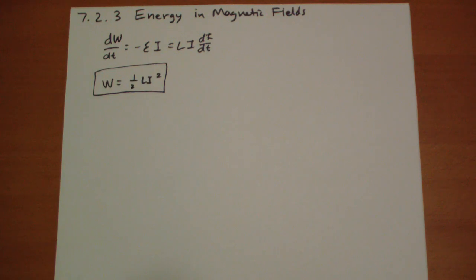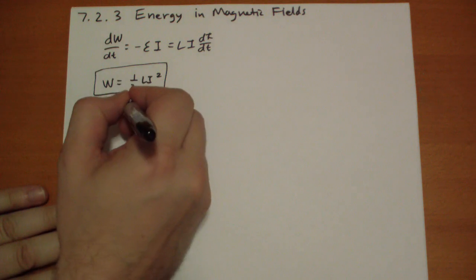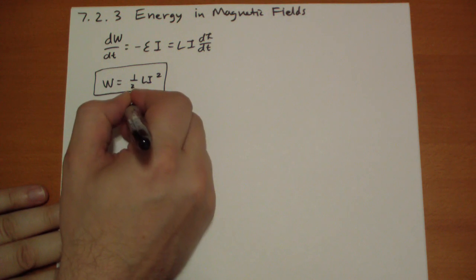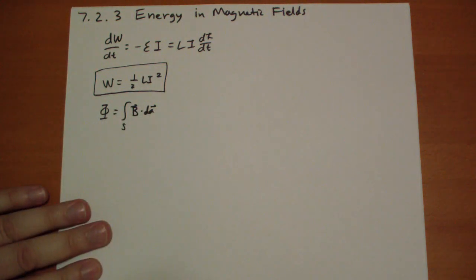Okay, so the flux phi through the loop is equal to Li. So the flux phi, this is a nicer way to work with this, is equal to the integral of B vector dot dA vector over some surface.